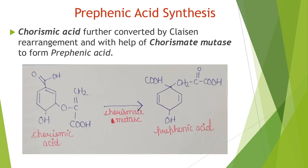Prephenate synthesis: chorismate is further converted by a Claisen rearrangement with the help of chorismate mutase to form prephenate.